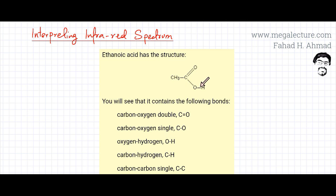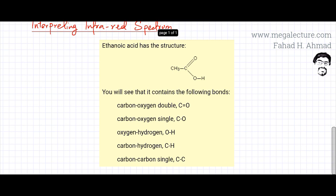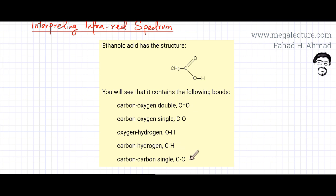You have oxygen-hydrogen bonds, lots of CH bonds — three CH bonds in the CH₃ group — and also a carbon-carbon single bond. All these bonds are going to absorb different frequencies from the infrared spectrum. If they need more energy, a higher frequency would be absorbed. If they need lower energy, a lower frequency would be absorbed. So many different frequencies are going to be absorbed when these bonds compress or stretch.